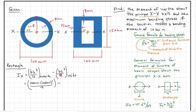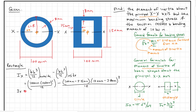For the inner dimensions: the base is 100 mm minus 2 × 15 mm (the wall thickness on each side), and the height is 120 mm minus 2 × 8 mm. So the full calculation is: (100 × 120³)/12 minus ((100 − 30) × (120 − 16)³)/12. It's a long equation, but when we work it out we get 7,838,293 millimeters to the fourth.